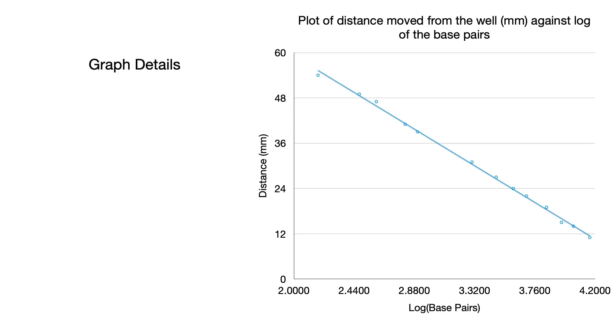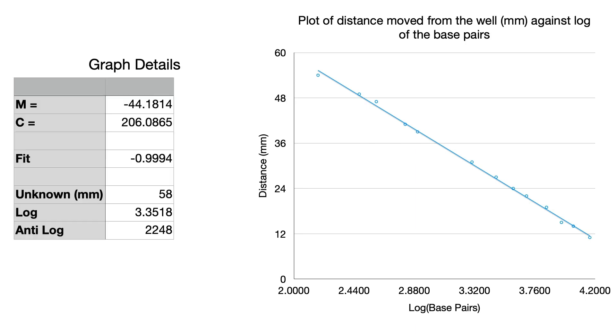So what about the graph details in this case? Well for the first graph, the larger version of the gel, we had these values that we calculated. And if we run the calculations again now for the new values we get a gradient of minus 22, we get an intercept at 103, we've still got a very very good correlation there so it's a very good fit.